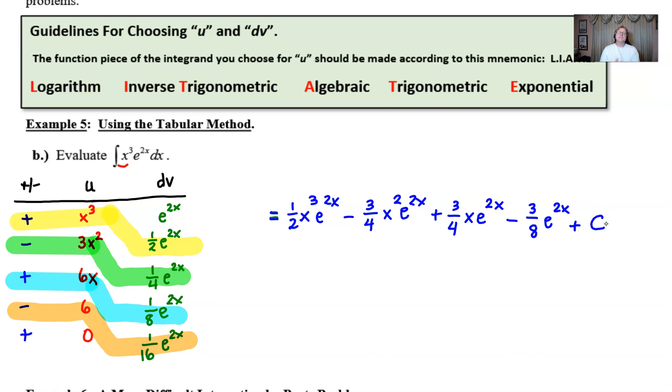Now we could check this answer with a graphing utility. I'm not going to show you that in this particular video but if you were to do that it's very likely that an e to the 2x would have been factored out. Maybe some simplification may have been done with a common denominator but I'll let you guys check that out if you so desire. But that is going to be the answer to this tabular method.